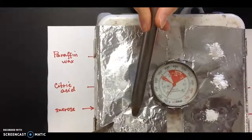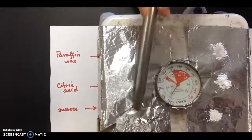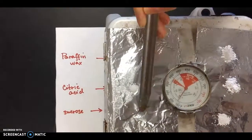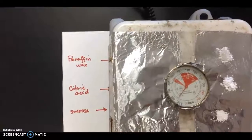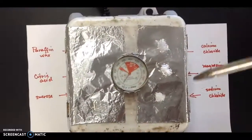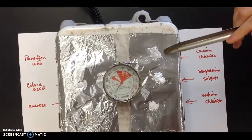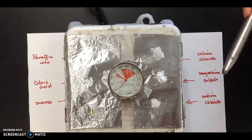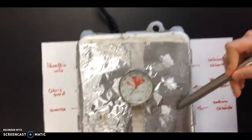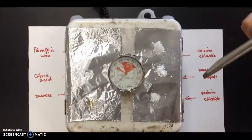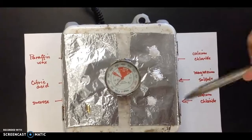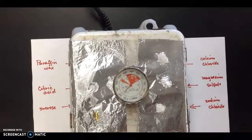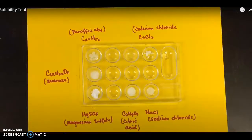For sucrose, you can already see it melting and that one is almost at 80 degrees Celsius, so go ahead and record that temperature. If you look at the compounds on the other side, you're going to observe that there's no change yet — they are going to require a lot more heat. We will now move on to testing for solubility.